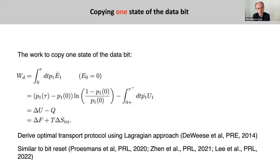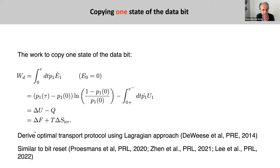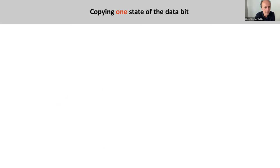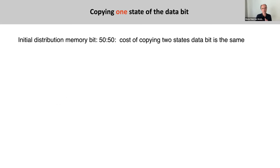From this, the work to copy a given state of the data bit is given by the free energy change of the memory bit plus the irreversible entropy production term. We can derive the optimal protocol using a Lagrangian approach, similar to that described by Baye et al. This problem has similarities to bit reset, although we also find some differences.